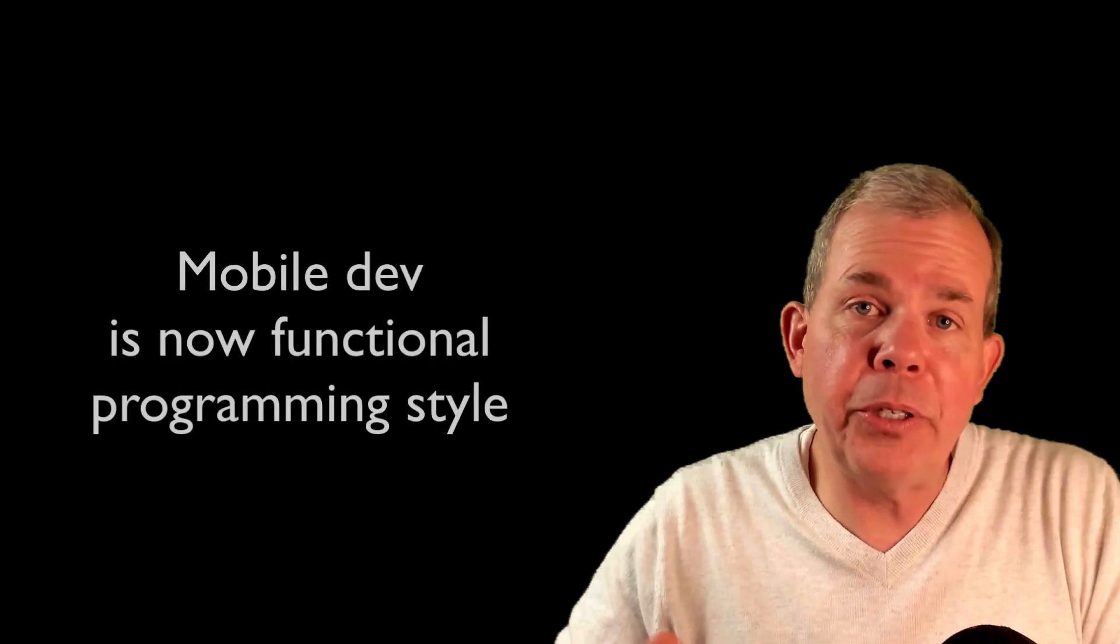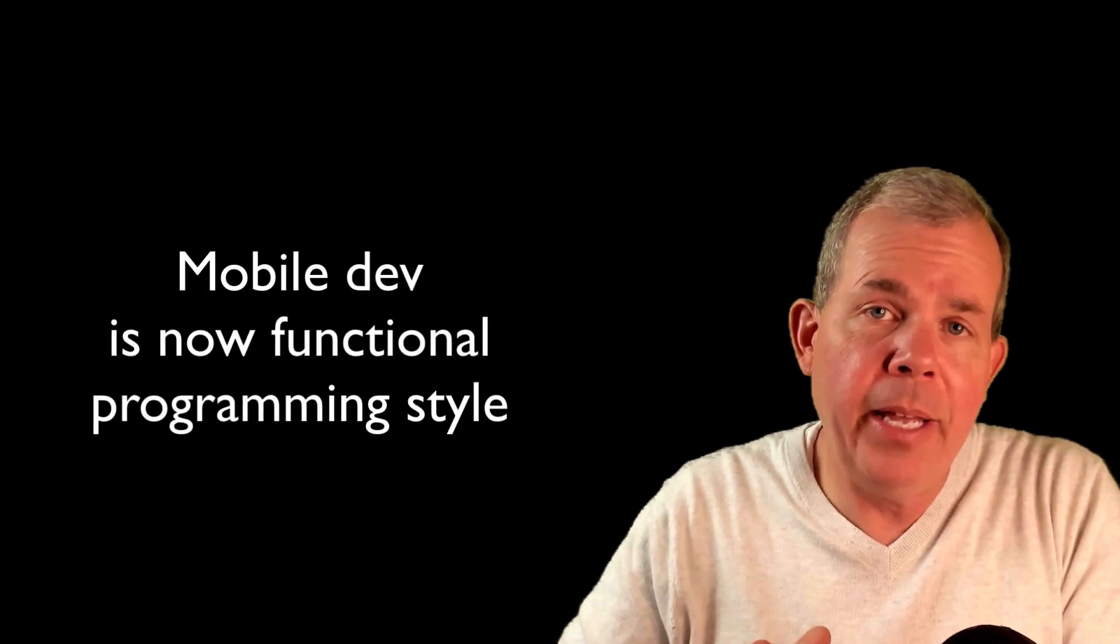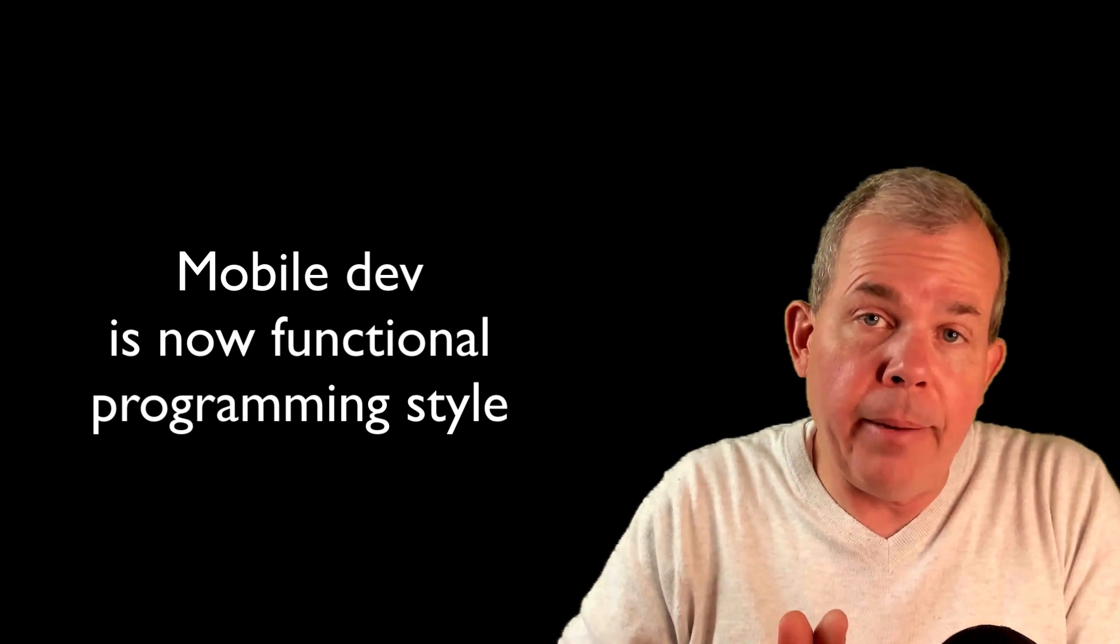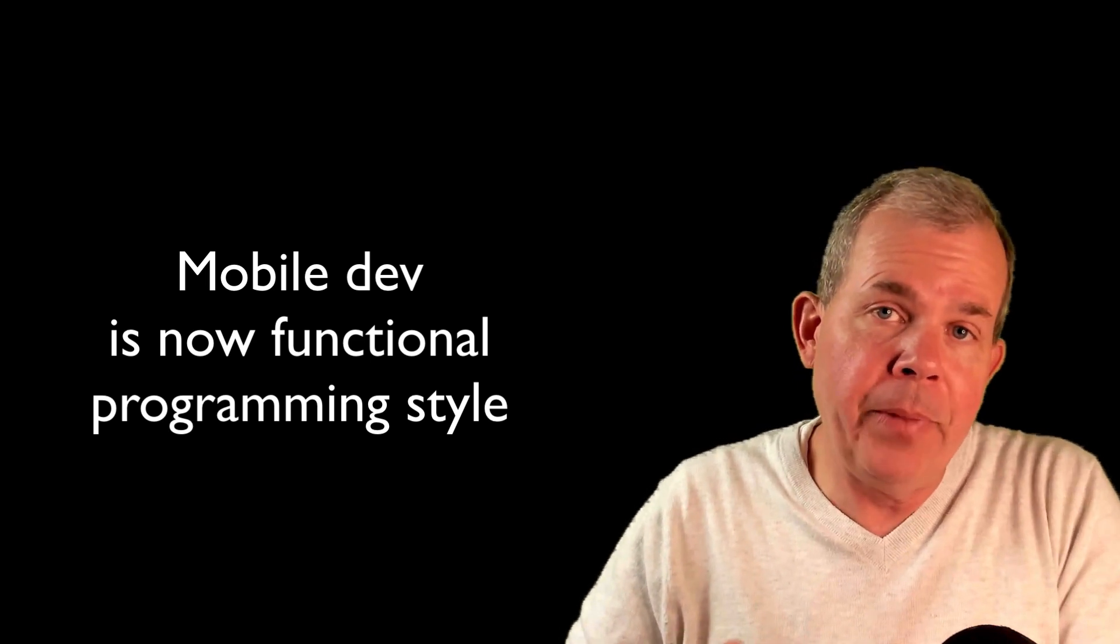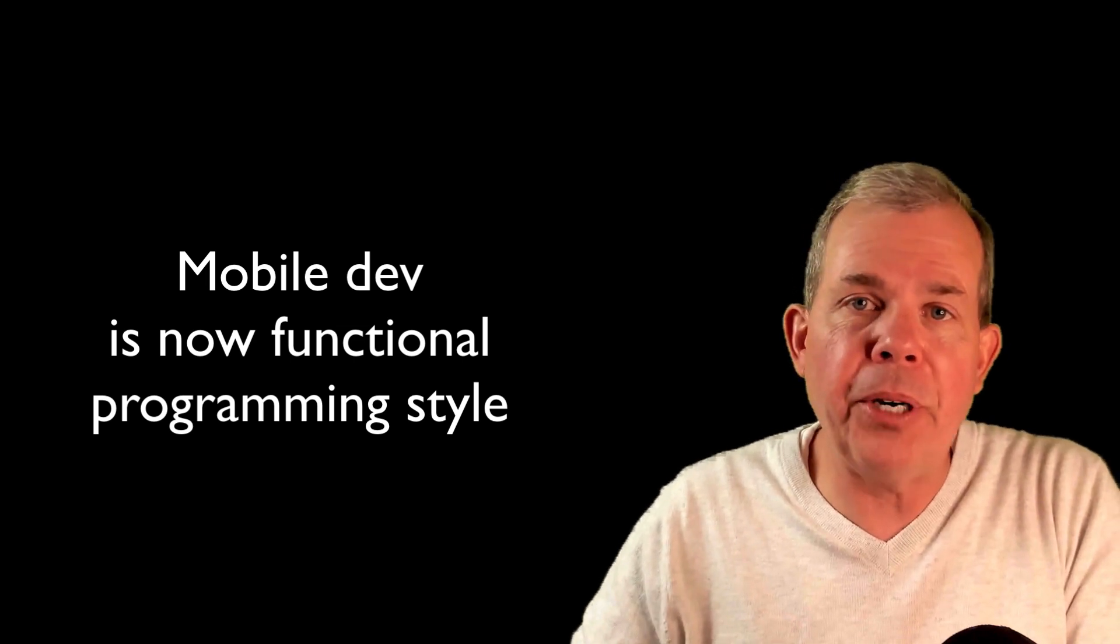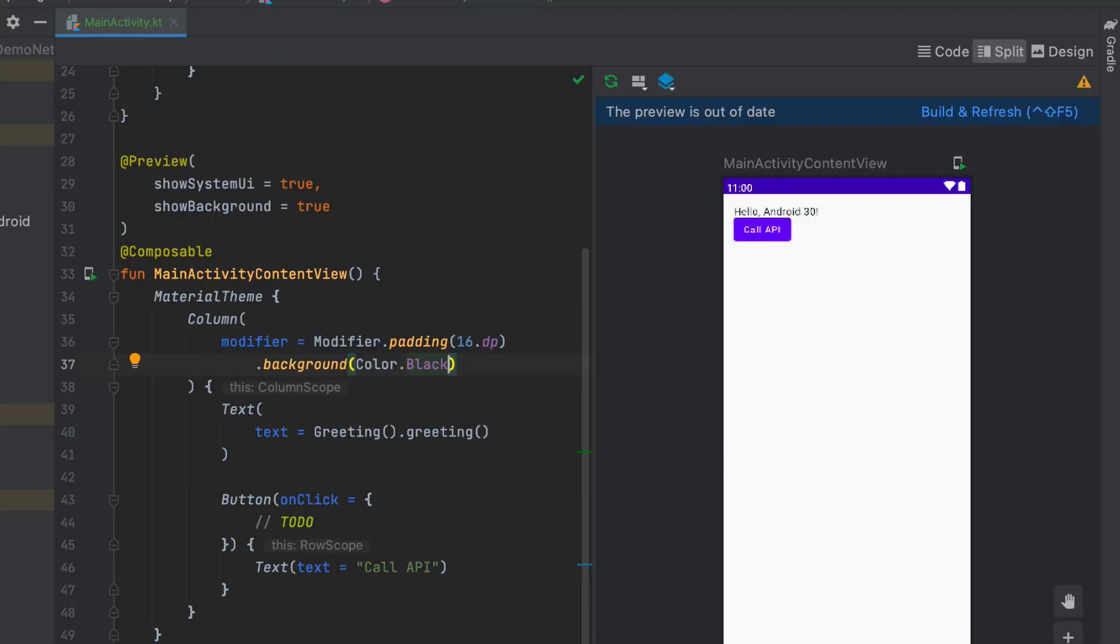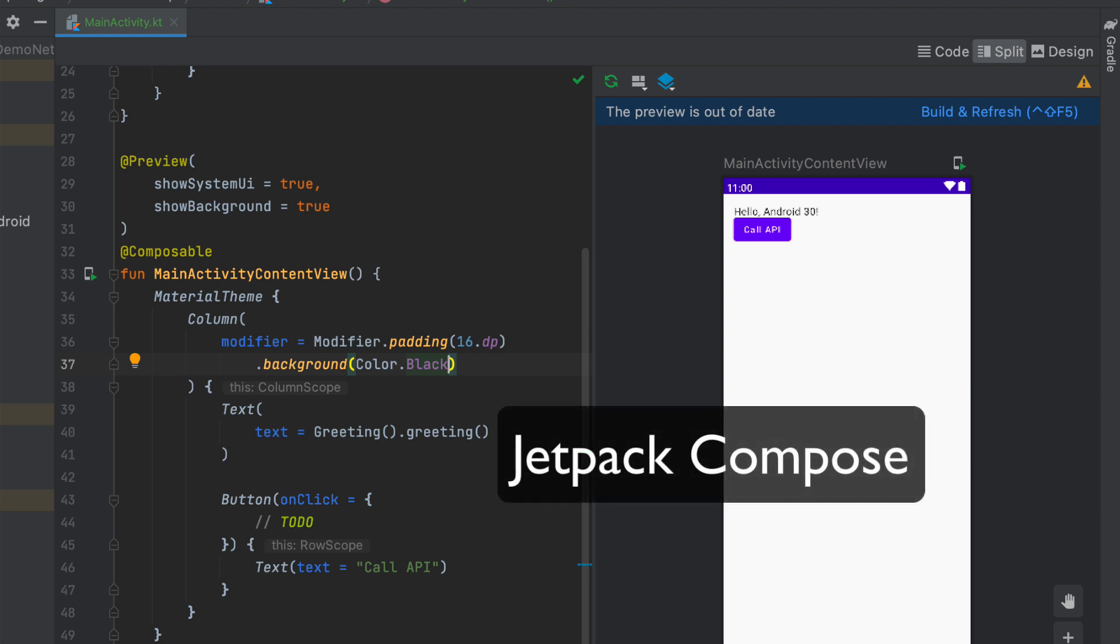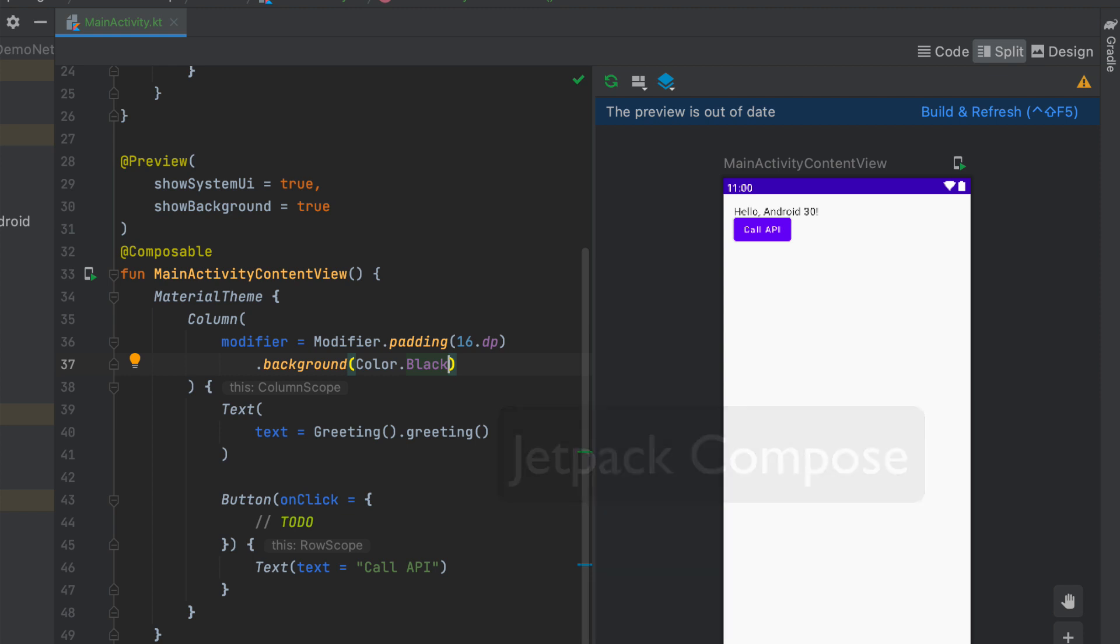Another example of functional programming where you see it all the time now is in mobile development. So both Google and Apple have completely revamped their approach to writing software using now functional programming. So in Android, we're using the Kotlin language and the new somewhat newish framework called Jetpack Compose is all about functional programming.